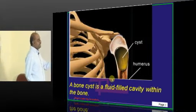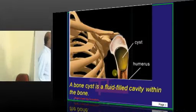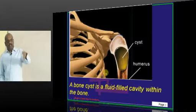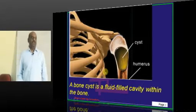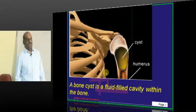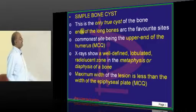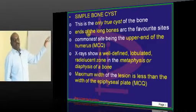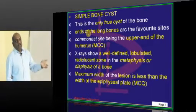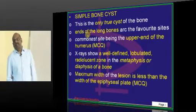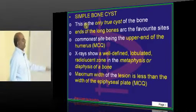A bone cyst is a fluid-filled cavity which is located within the bone — that is what you have to basically remember. Simple bone cyst is the only true cyst which can occur inside the bone.